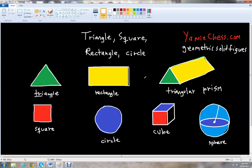Yammy Chess is the math learning aid based on classic chess that helps students in math and science education for school. In this lesson we will learn about basic shapes in geometry as well as geometric solid figures. So the four important shapes that we're going to learn today are the triangle, square, rectangle, and circle.